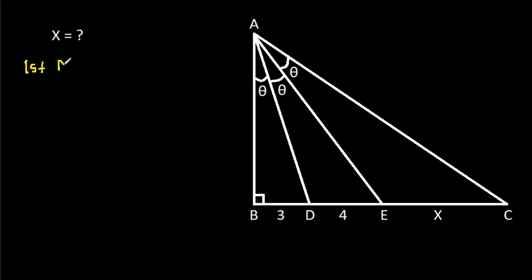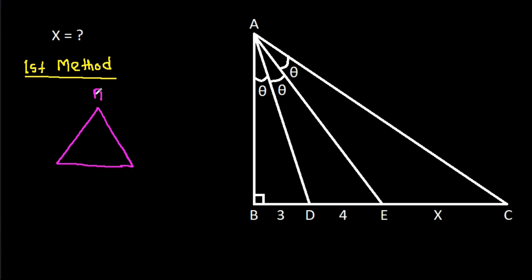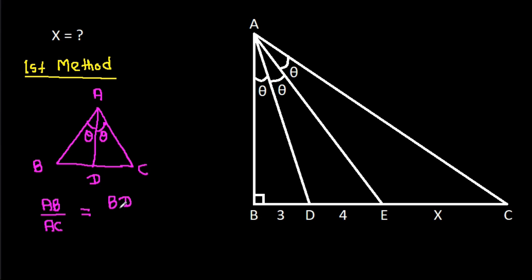The first method: in any triangle ABC, if AD is the angle bisector, then AB over AC will be equal to BD over CD.